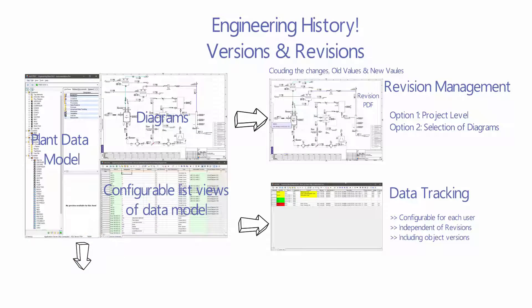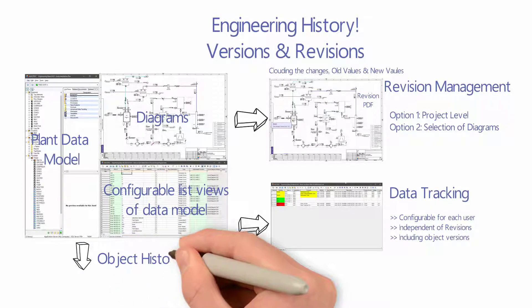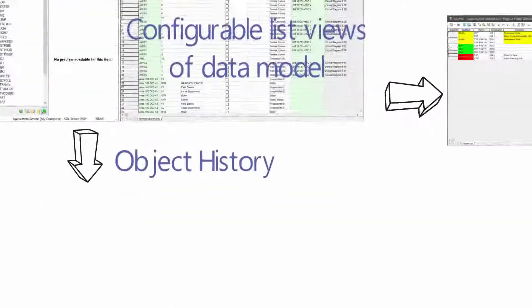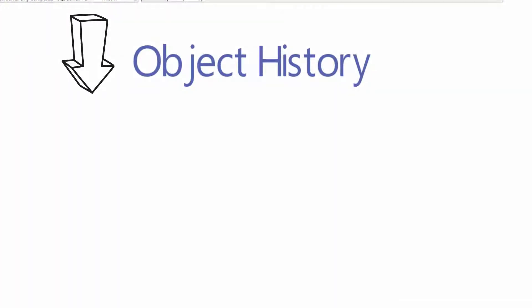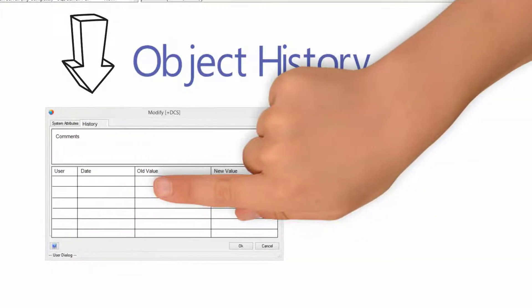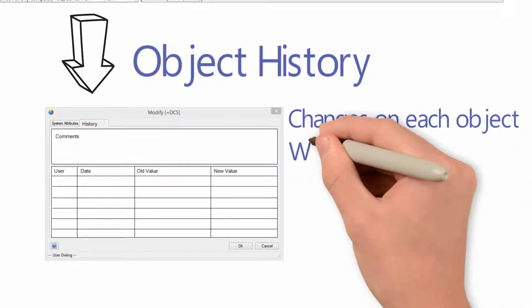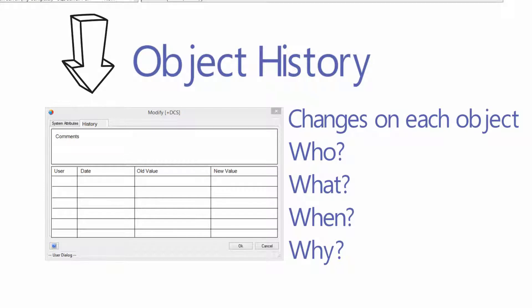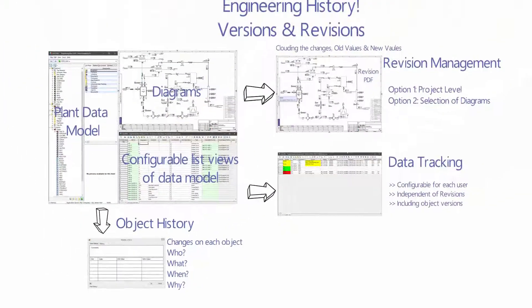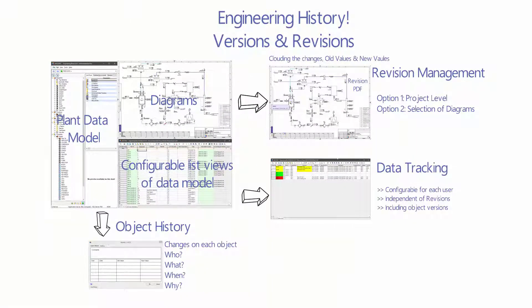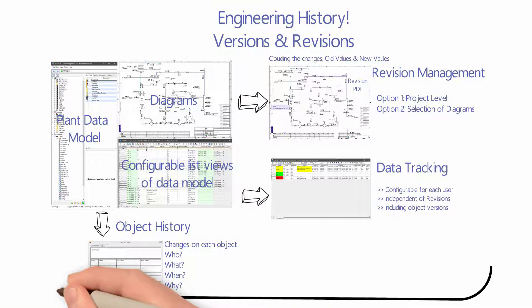Next is the object history in the plant data model. Here the user can track the changes on an object to see who changed what, when, and why. So this was about tracking of what happened in the past.